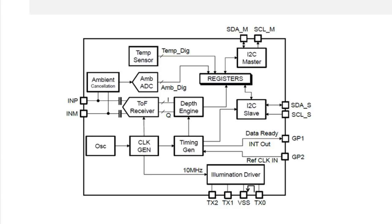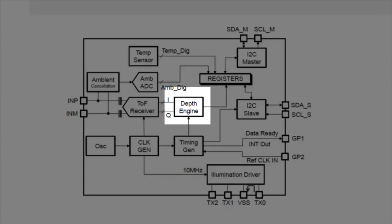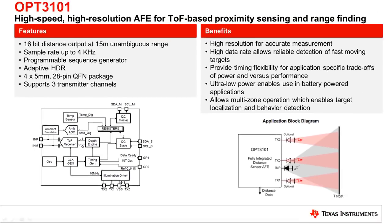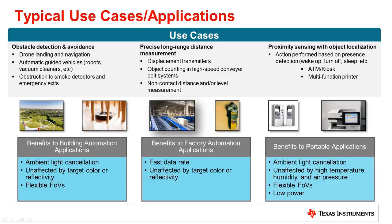The AFE is capable of compensating several system-level artifacts like phase offset drift, frequency drift, ambient drift, crosstalk, and more — corrections for which are applied within the AFE. The depth engine computes the phase, amplitude, and ambient for each measurement. OPT3101 can be used to solve many problems across a variety of industries. One typical use case is optical detection and avoidance, used in applications like drone landing and navigation and automatic guided vehicles. OPT3101's excellent ambient light cancellation allows for devices to perform well in both indoor and outdoor applications.